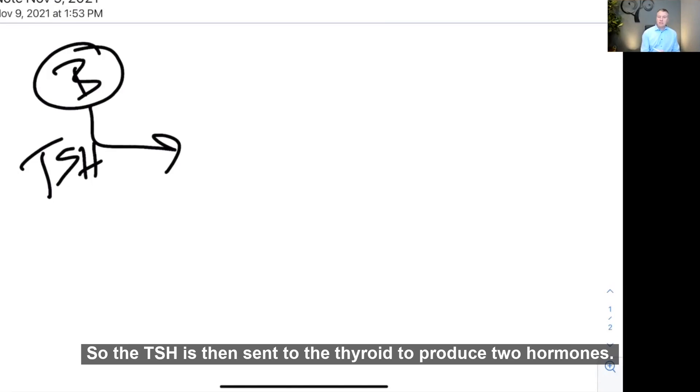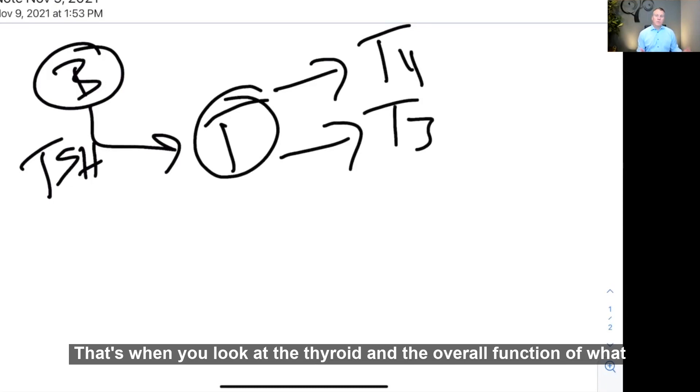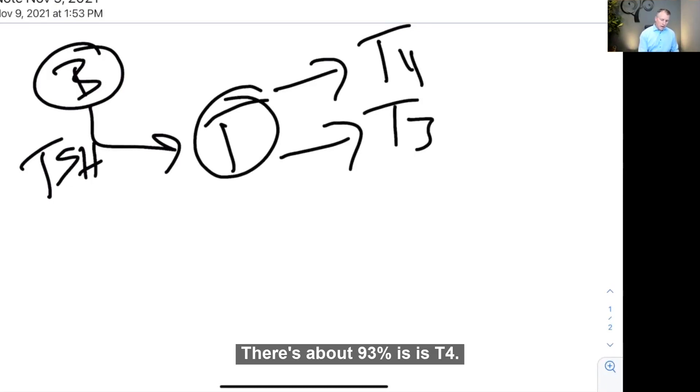So the TSH is then sent to the thyroid to produce two hormones, that's T4 and T3. Now, interestingly enough, when you look at the thyroid and the overall function of what it's producing, there's about 93% is T4 and about 7% is T3.